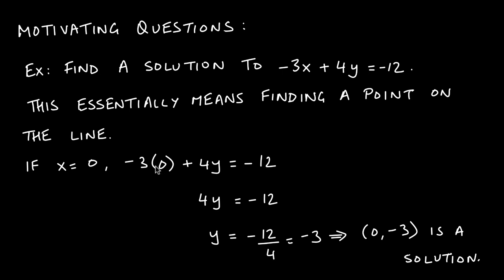Negative 3 times 0 is just zero, so it drops off, leaving 4y equals negative 12. To get y by itself, since 4 and y are being multiplied, we use the inverse operation — division. Dividing both sides by 4 gives us y equals negative 12 over 4, which is negative 3. So the point zero comma negative 3 is a solution.